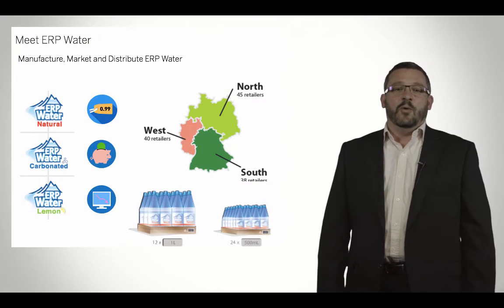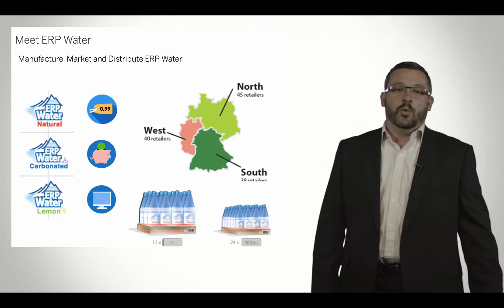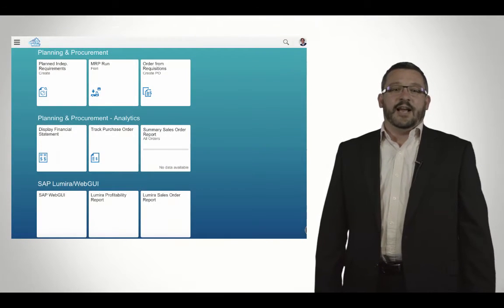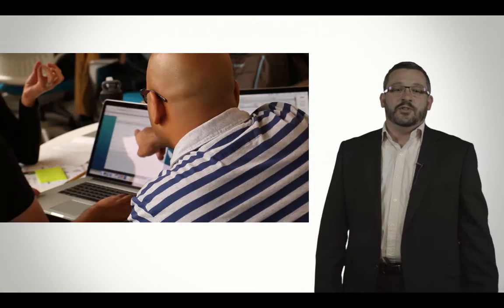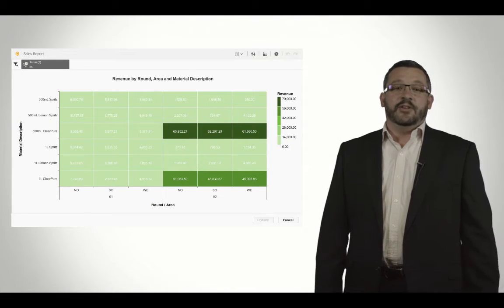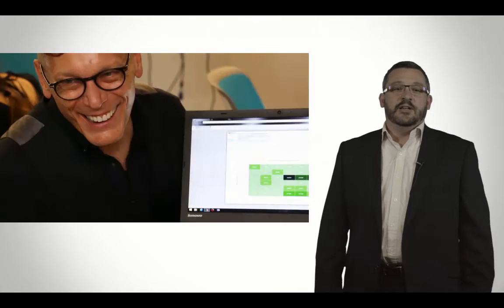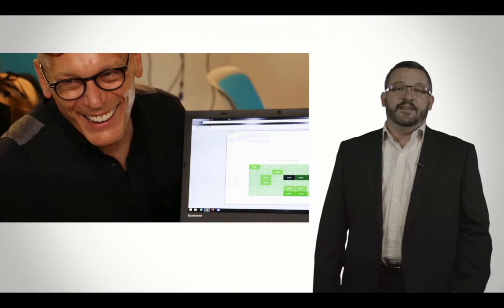Players take on a different role for the fictitious company ERP Water. They run Fiori transactions to set product pricing, marketing budgets and stock levels. They then use real-time analysis in SAP Lumira to validate their business decisions and change their strategy immediately if needed.